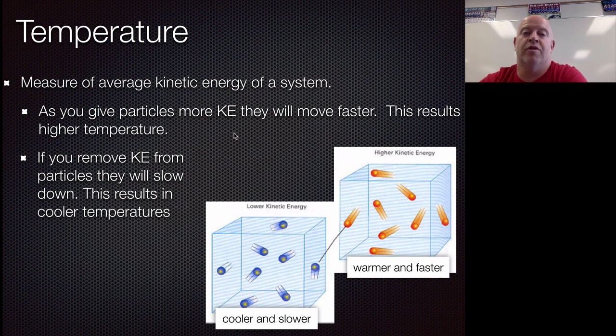The faster particles move, the more energy they have, so their temperature is hotter. So it's a really easy way for us to track energy by measuring temperature. So if we remove kinetic energy from particles, they will slow down, resulting in cooler temperature. So two different ways of looking at it.